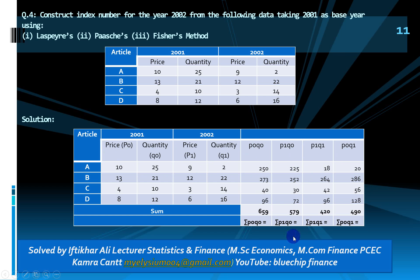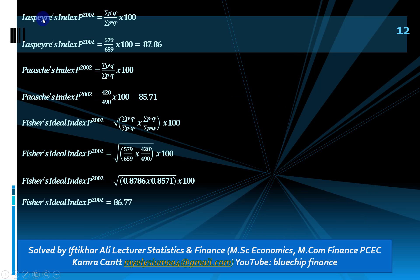Laspeyres index is 87.86, Paasche index is 85.71, and Fisher index is 86.77. Alternatively, if you have the Laspeyres and Paasche answers, simply multiply them and take the square root — that will also equal the Fisher index.